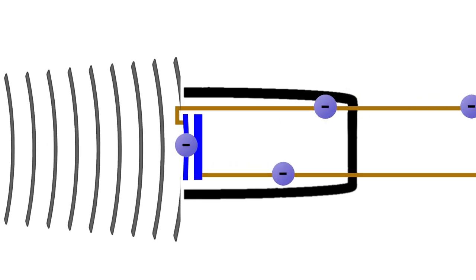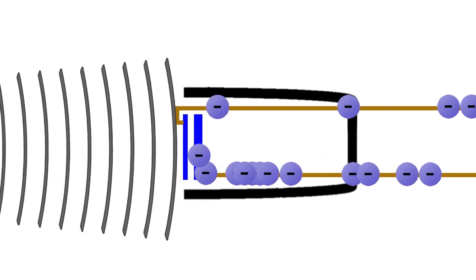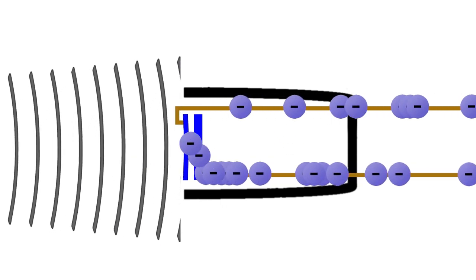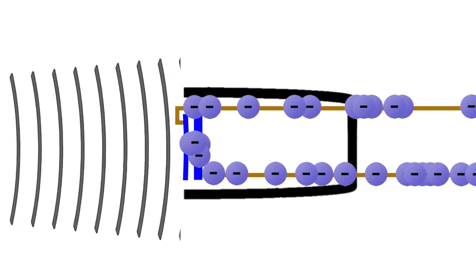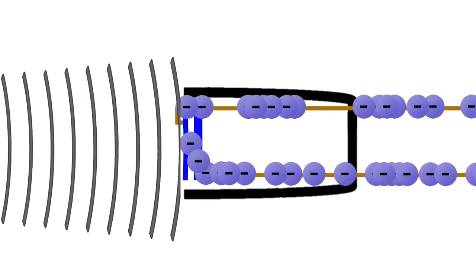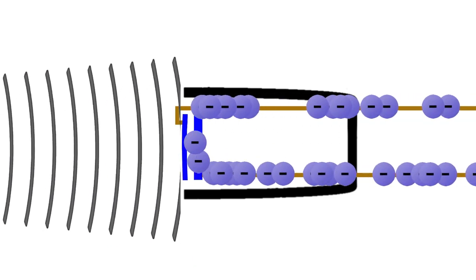In a condenser mic, two metal plates are placed very close to each other. The upper plate is flexible so it can move back and forth. When a person speaks, the sound waves hit the upper plate — called the diaphragm. As a result, the distance between the two plates decreases and increases, which changes their electrical charge. This disrupts the flow of electrons, which is taken as the sound signal.